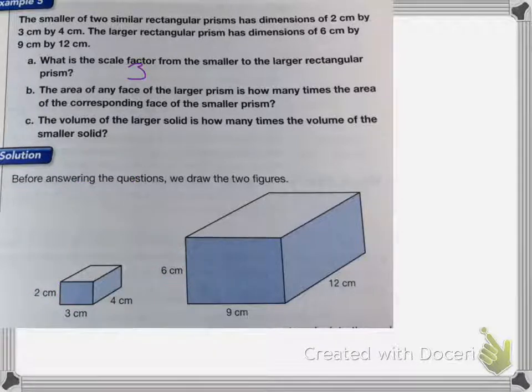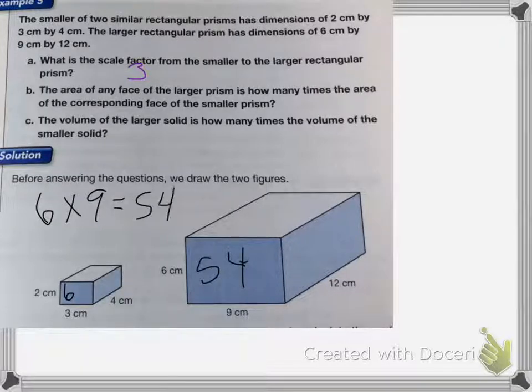For B, the area of any face of the larger prism is about how many times the area of the corresponding face of the smaller side. Since the scale factor from the smaller to the larger figure is 3, the area of any face of the larger figure should be 3 squared, 9 times the area of the smaller side. So if I was to find this front area, so the area of the front of my rectangular prism would be 6 times 3, so that's going to be 6 centimeters there. And then 6 times 9 is 54 centimeters. So you notice 6 times 9 equals 54. So the area is 9 times bigger.